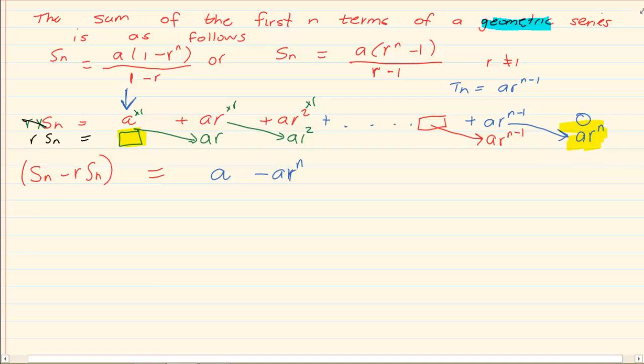Now if we take out a common. Again it is about factorizing. If I take out a common a I am left with 1 minus r to the power of n. And then at Sn I take out Sn as a common and I am left with 1 minus r.